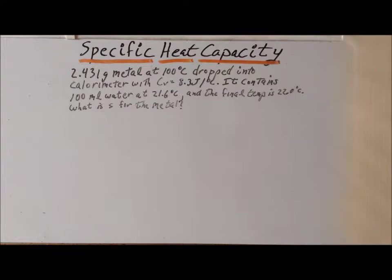In this video, we want to calculate the specific heat capacity of an unknown metal, but in a case where we also have to include the effects of the calorimeter. In the specific case, we have 2.431 grams of the metal, which start at 100 degrees centigrade,